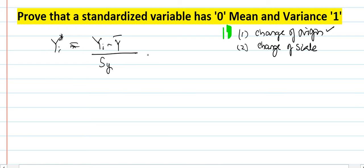So this is known as your standardized variable and we want to prove that this standardized variable is having zero mean and one as variance.